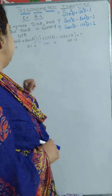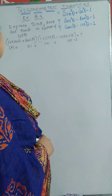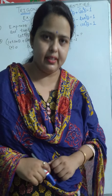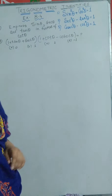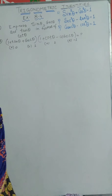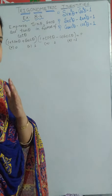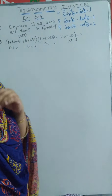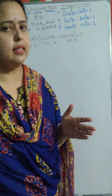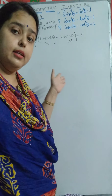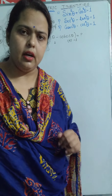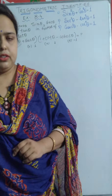I have taken the first question of your 8.4 exercise. I hope you have gone through the material, and here is the explanation for that particular problem. The question is: Express sin θ, sec θ, and tan θ in terms of cot θ.